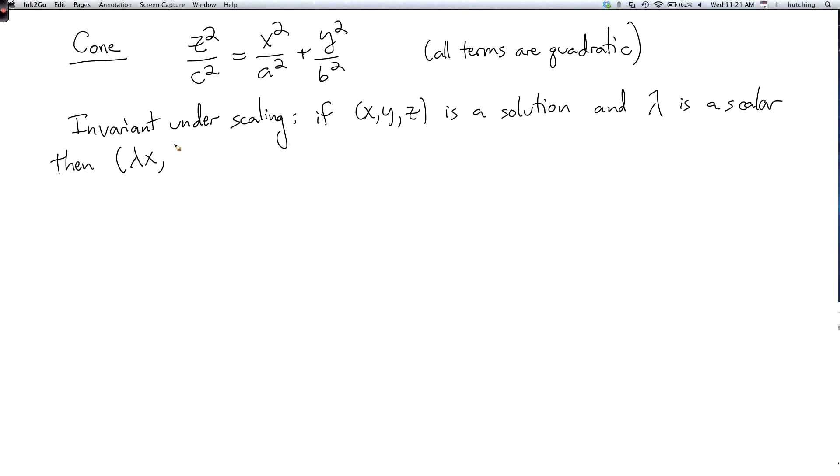then lambda x, lambda y, lambda z is also a solution. Because when I plug lambda x, lambda y, lambda z into the equation I just multiply everything by lambda squared so the equation still holds.